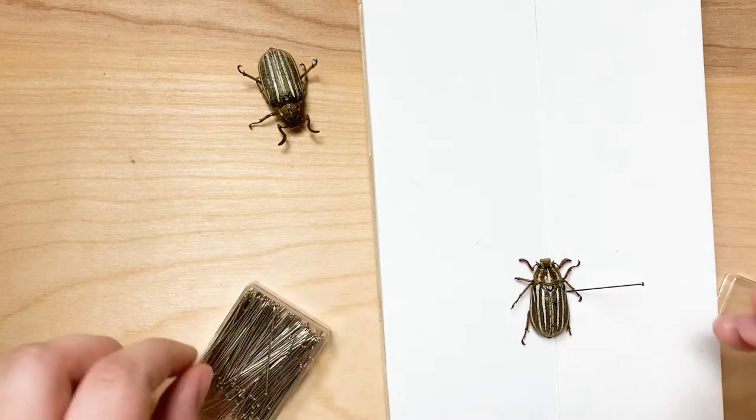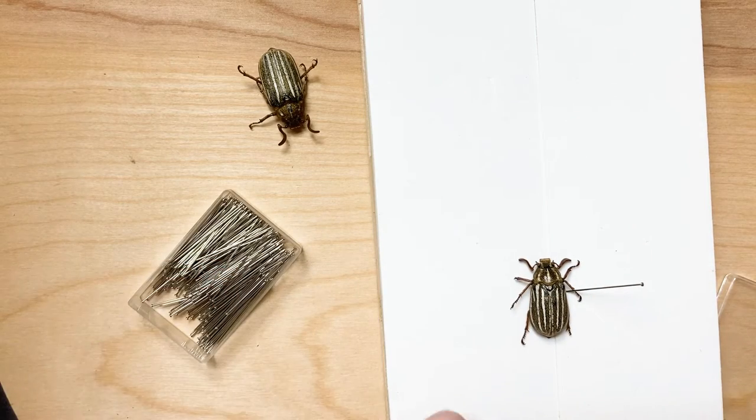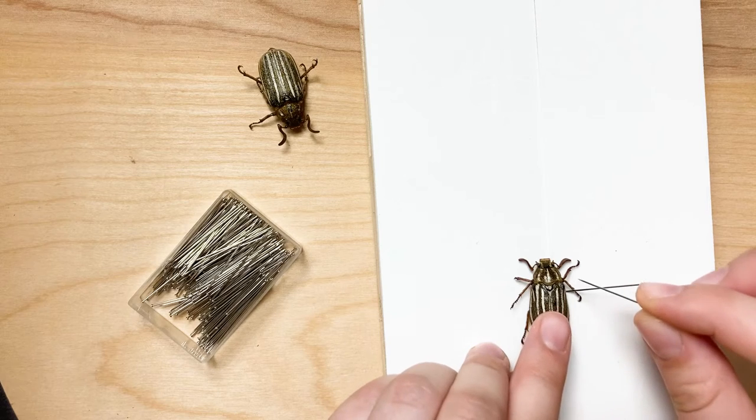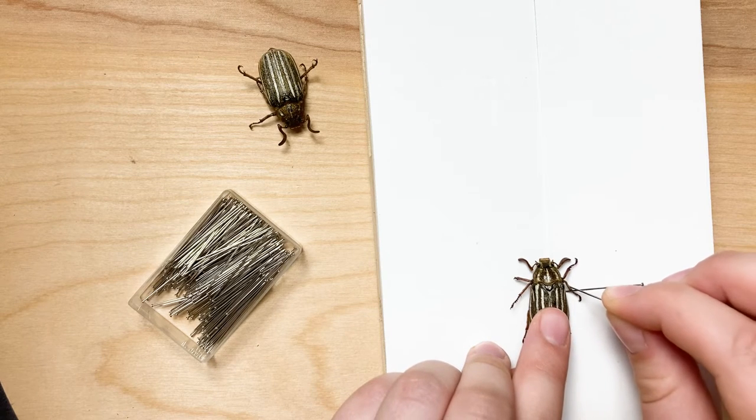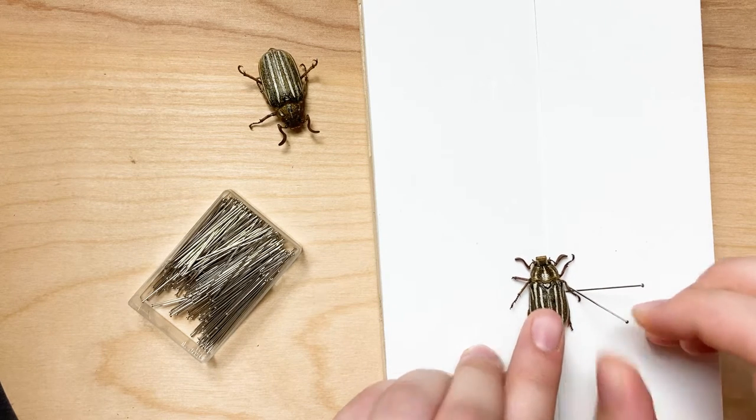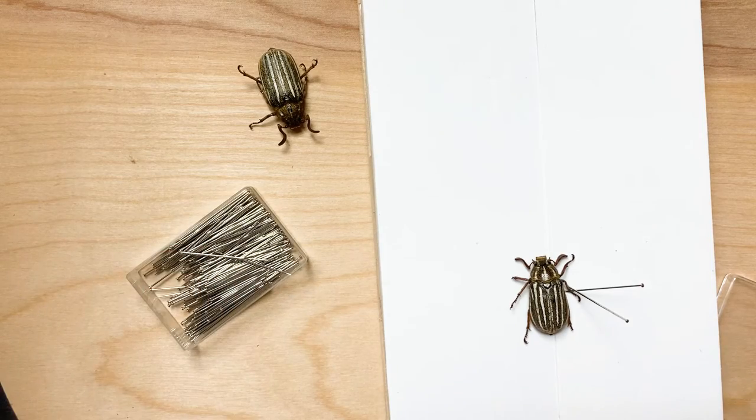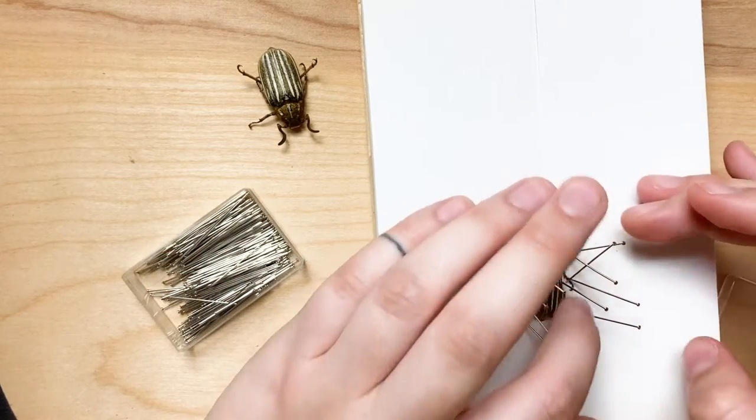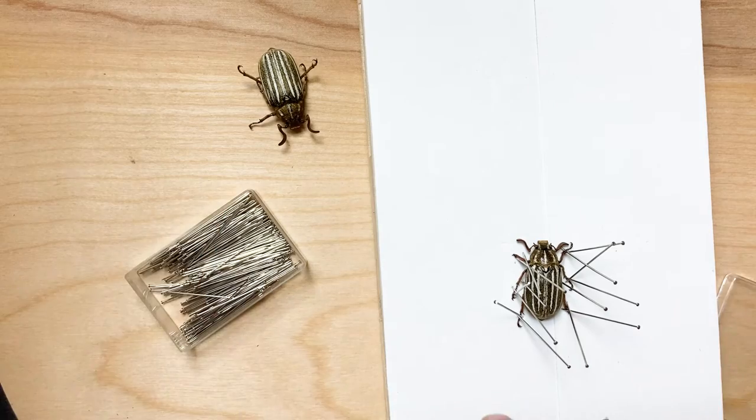The pins keep the beetle from moving while I adjust everything else. You can actually put a pin straight through the right wing, which isn't usually too obtrusive in the final product, but I still prefer to stabilize the specimen with pins around the legs.